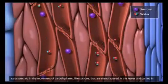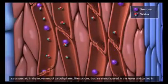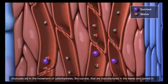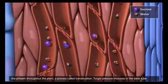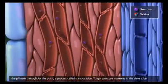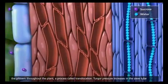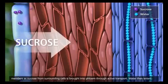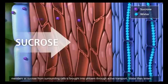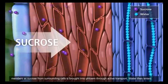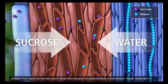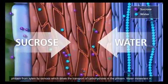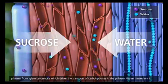These structures aid in the movement of carbohydrates, like sucrose, that are manufactured in the leaves and carried in the phloem throughout the plant, a process called translocation. Turgor pressure increases in the sieve tube members as sucrose from surrounding cells is brought into phloem through active transport. Water then enters phloem from xylem by osmosis, which drives the transport of carbohydrates in the phloem.